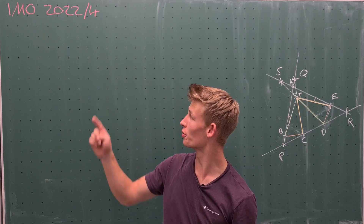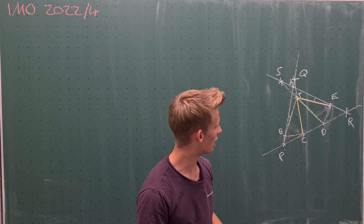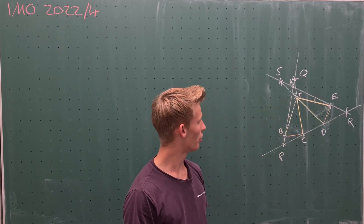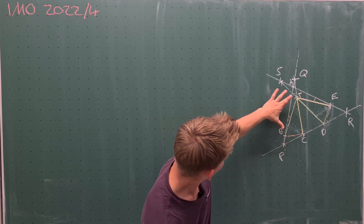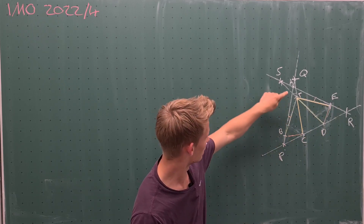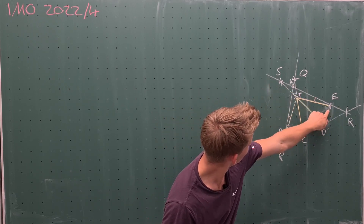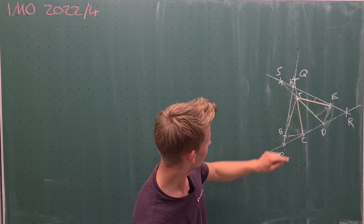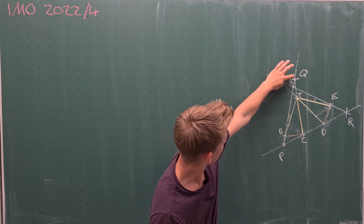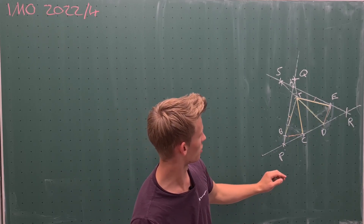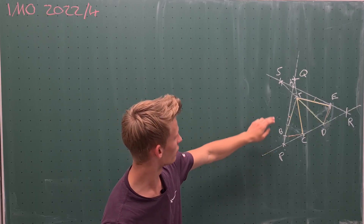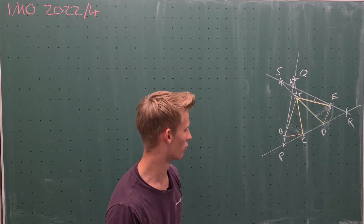Today I want to present a solution for IMO 2022 Problem 4. A pentagon ABCDE is given such that BC is equal to DE. We take a point T inside the pentagon such that TB equals TD, TC equals TE, and angles ABT and AET are equal. We take P as the intersection of AB with line CD, Q as the intersection of AB with line TC, R as the intersection of AE with CD, and S as the intersection of AE with DT. Our goal is to prove that S, P, R, and Q lie on one circle.